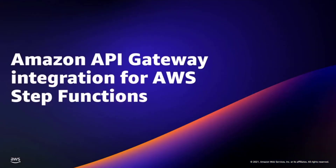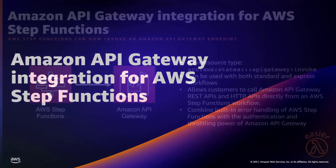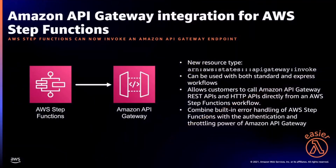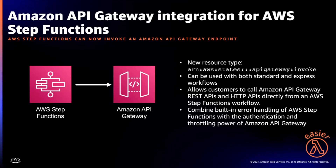API Gateway also has a new integration for Step Functions. Step Functions can now invoke an API Gateway endpoint. This integration provides an additional resource type and can be used with both standard and express workflows, allowing customers to call API Gateway REST APIs and HTTP APIs directly from a Step Functions workflow. Developers can combine the built-in error handling of Step Functions with the authentication and throttling power of API Gateway.